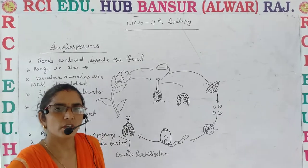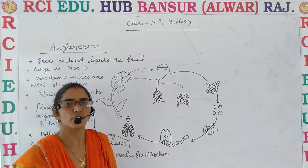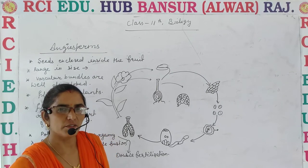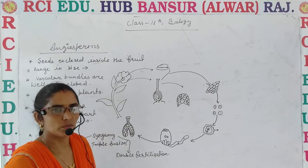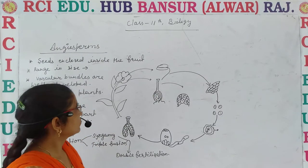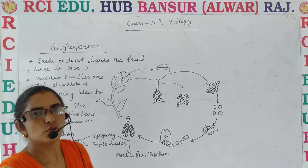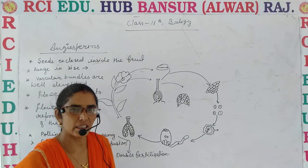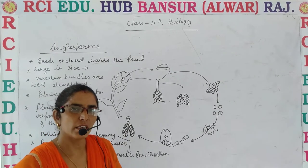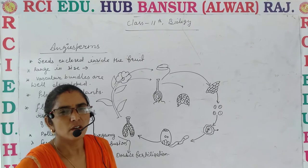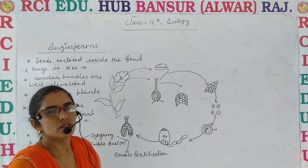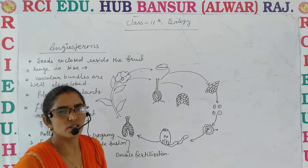Hello students, good morning, welcome to the online classes of RCE Education of Pansur. Let's start Class 11th Biology, chapter number 3, Plant Kingdom. We have discussed about algae, bryophyta, pteridophyta and gymnosperm. As we go one level upward, complexity should be increased. So here let me discuss some important features of the angiosperms.